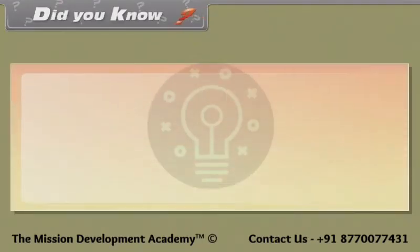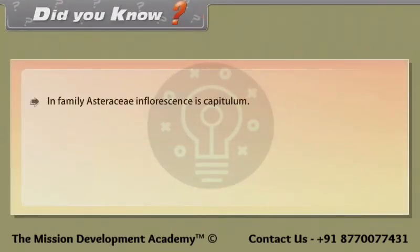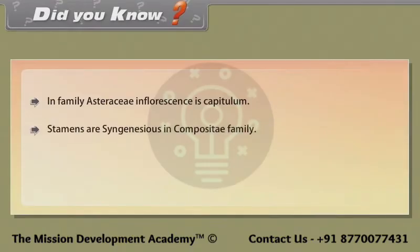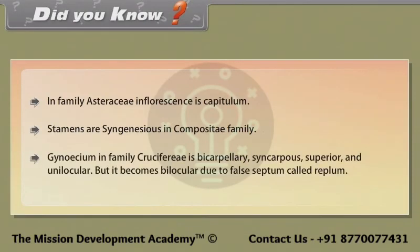Did you know: In family Asteraceae, the inflorescence is a capitulum and stamens are syngenesious. In family Cruciferae, the gynoecium is bicarpellary, syncarpous, superior and unilocular but becomes bilocular due to a false septum called replum.